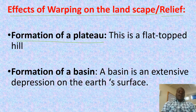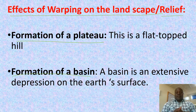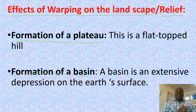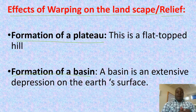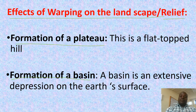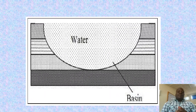Then we have formation of a basin. A basin is an extensive depression on earth's surface — a U-shaped depression on earth's surface. This happens majorly because of down warping.